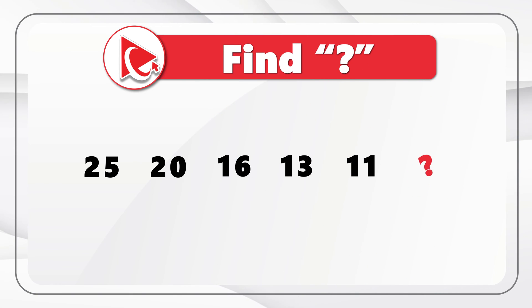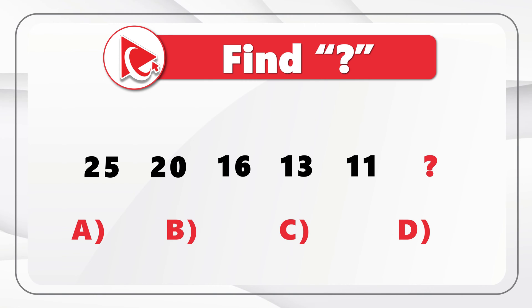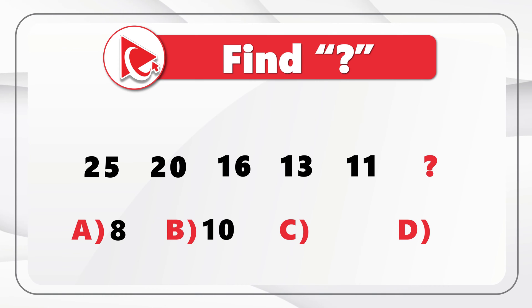You need to calculate the missing number out of four possible choices: choice A is 8, choice B is 10, choice C is 7, and choice D is 9.